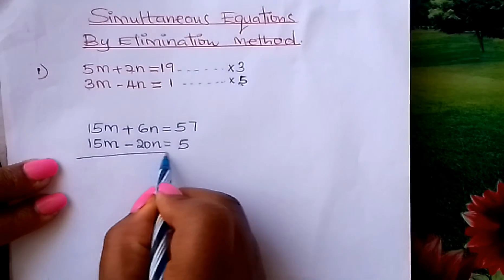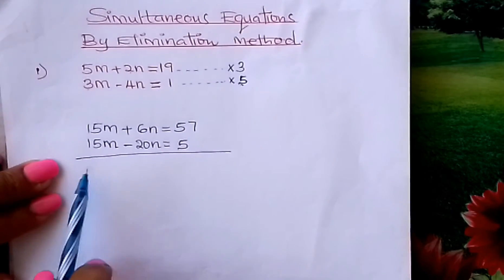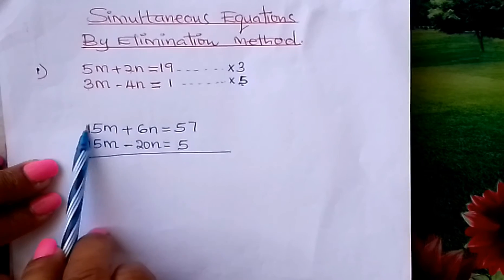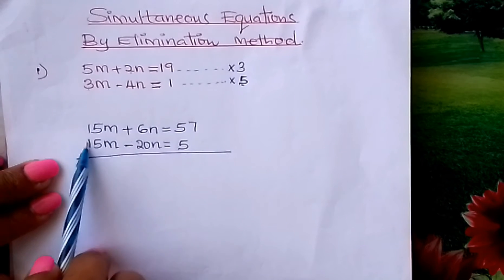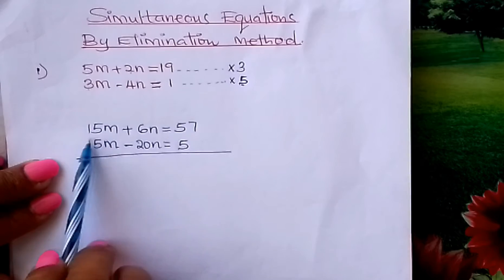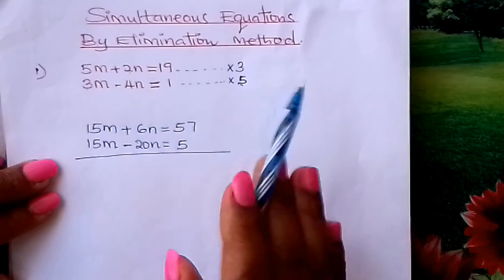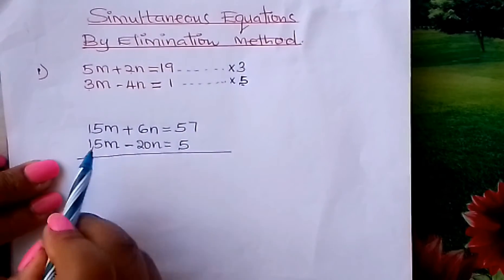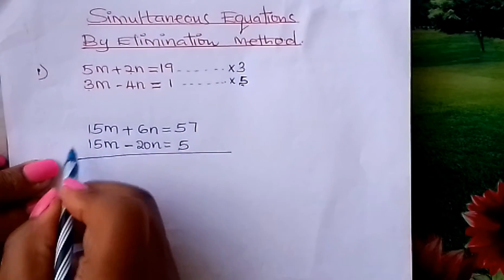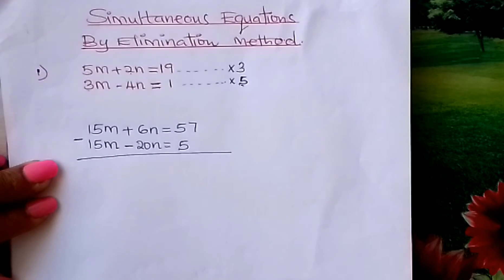From there, draw a line. Then you ask yourself, how can I eliminate this 15M? It is by subtraction. To eliminate means to remove or do away with. To eliminate these terms, you subtract.